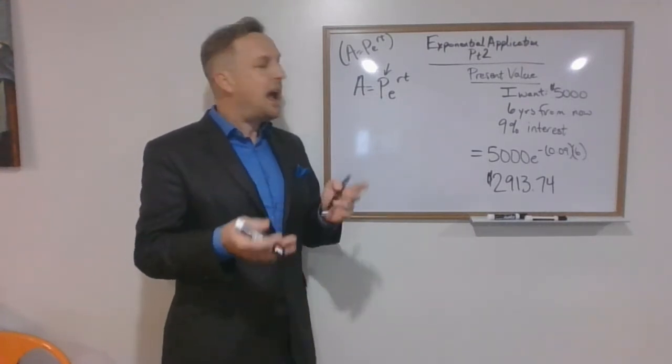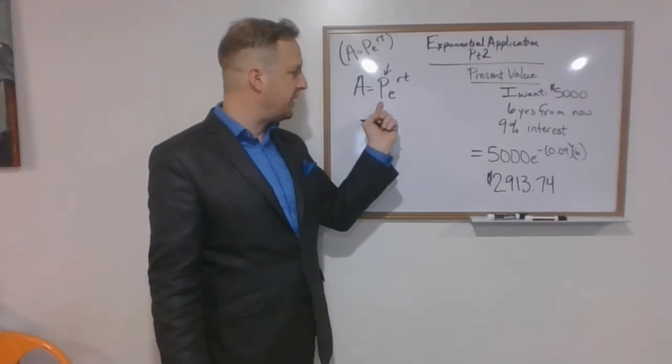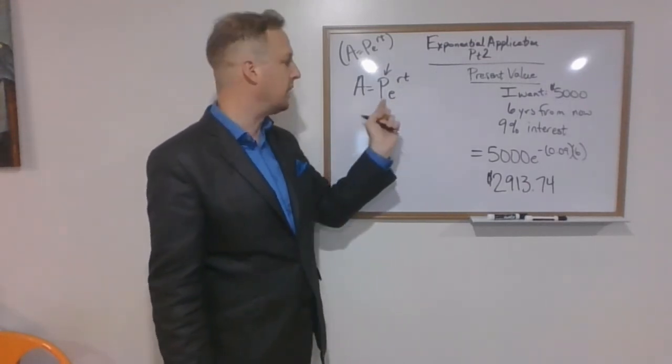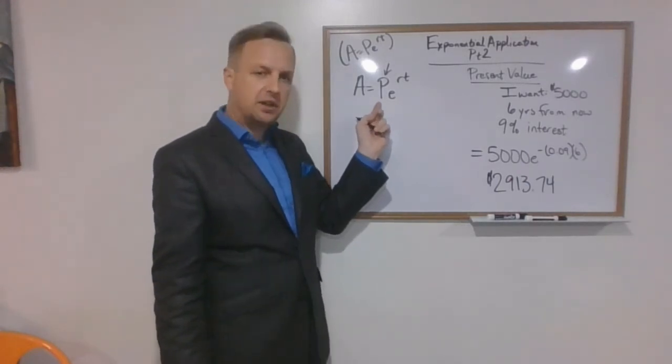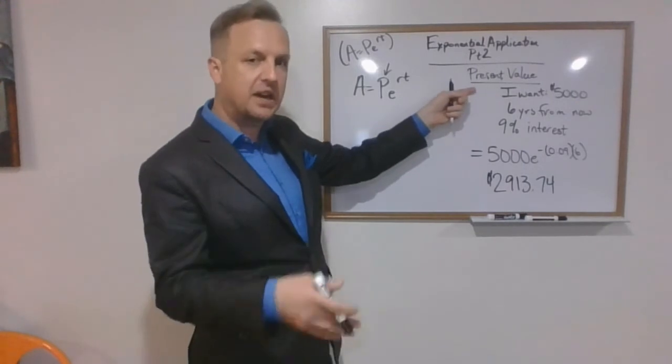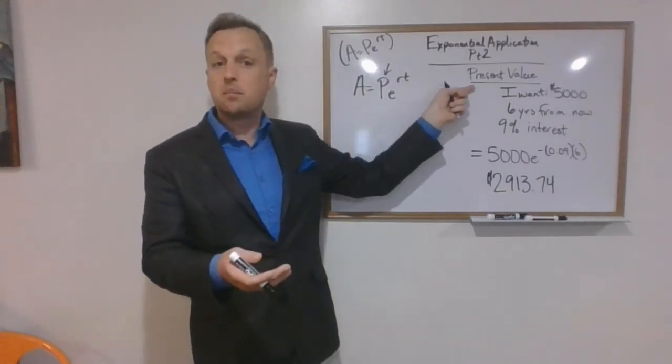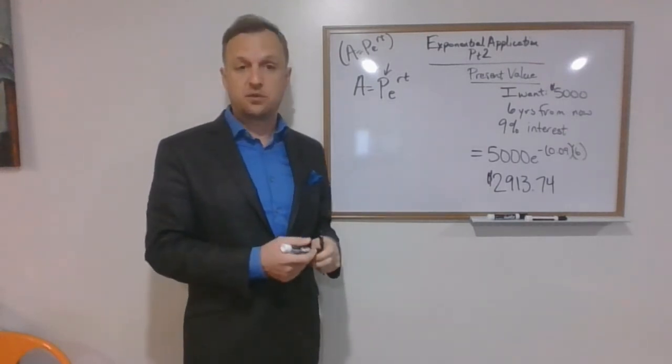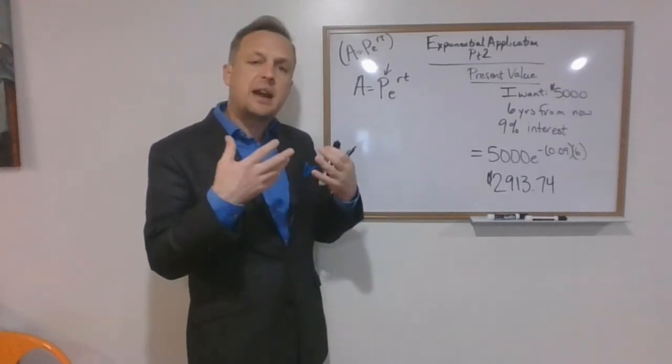In other words, how can I calculate or isolate the P, the present value or principle if you will, in this equation? Like for example, let's say I wanted $5000 six years from now, and I knew that that account was going to pay me 9% interest. So how much would I need to start with now?